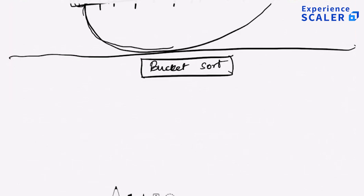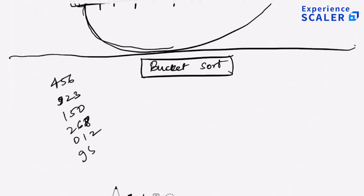Radix sort is exactly bucket sort. For example, hypothetically, let's say you had a lot of numbers: 456, 923, 150, 268, 12, and maybe 950.